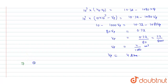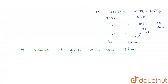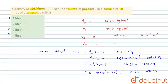The volume of pure milk V_p = 4 liters. Looking at the options: a) 1 liter, b) 2 liters, c) 3 liters, d) 4 liters — option D, 4 liters, is the correct answer. I hope you understood the solution, thank you.